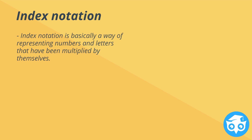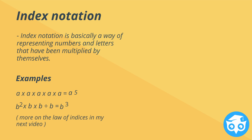Index notation is a way of representing numbers and letters that we multiply by themselves. For example, a × a × a × a × a is equal to a to the power of 5. And b² × b × b ÷ b is equal to b cubed. More on the law of indices in my next video.